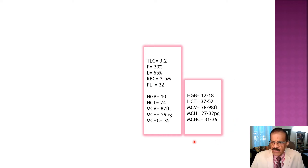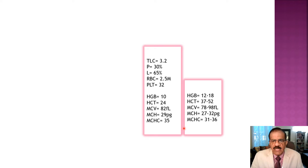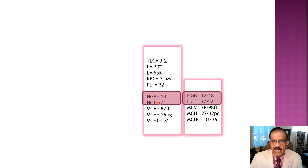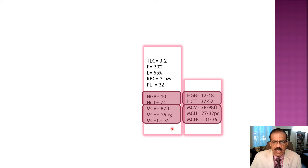This is an exercise. We have a patient's CBC report alongside normal values. Using the three-step approach from the earlier lecture, the first thing we notice is hemoglobin and hematocrit. In this case both Hb and hematocrit are less than normal. A normal adult should have 12 to 18 grams of hemoglobin and 37 to 52% hematocrit. Both values are low, confirming this patient is anemic. Step two requires examining the RBC indices and morphology.